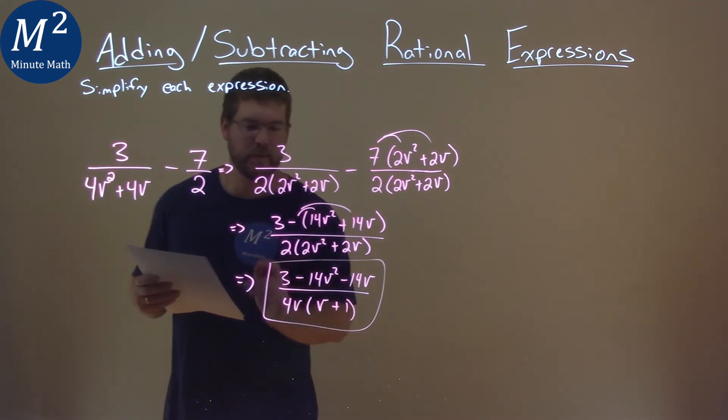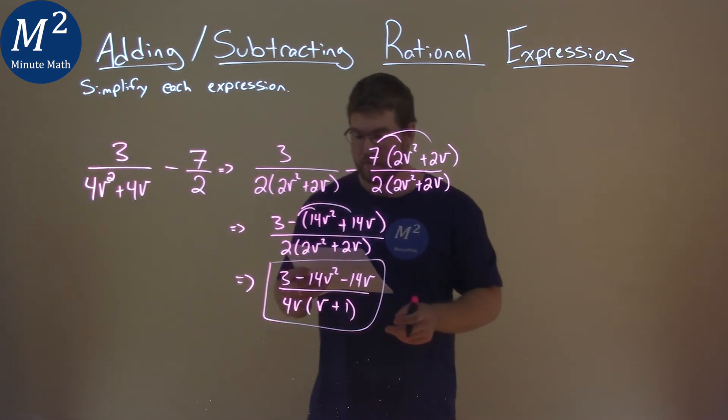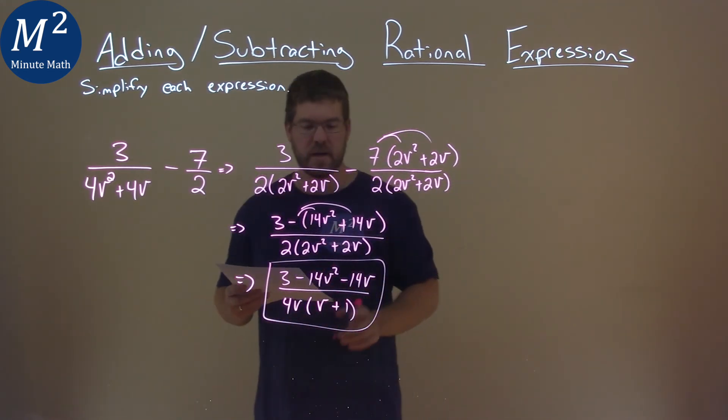And so basically, this is pretty much simplified. And so our final answer is 3 minus 14v² minus 14v over 4v times (v + 1).